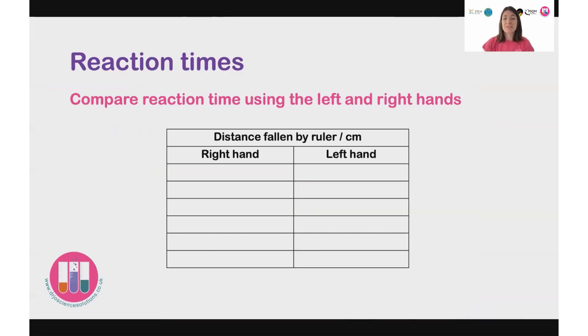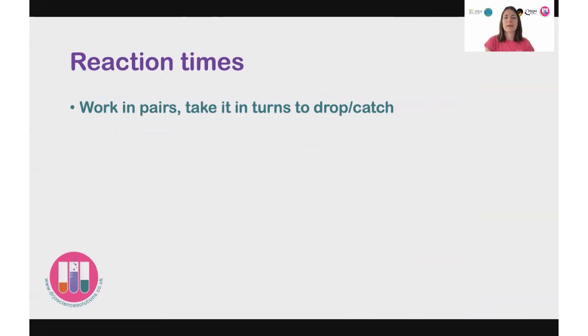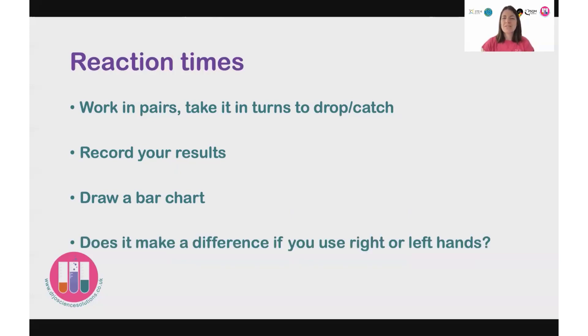So in this experiment, this investigation, we're comparing left and right hands. So you're going to work in pairs and take it in turns to drop or catch the ruler. Record your results in a table a bit like the one I've shown you. Then you're going to draw a bar chart of your results. And then we can have a look at these. So you're going to add them together, create an average and draw a bar chart of them. And does it make a difference then if you use your left or right hand? And does that make a difference if you are left or right handed for writing?